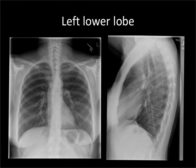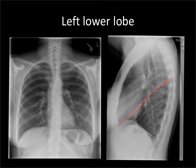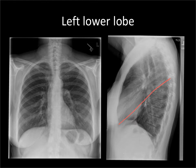The easiest place to start is by drawing the fissures, and the easiest fissures to draw are on the lateral chest x-ray. The oblique fissure runs roughly from the apex of the heart to about the level of the aortic notch on both sides of the thorax. So you know when you look at the frontal chest radiograph that the lower lobe is going to come up as high as this — all the way up to the aortic notch.